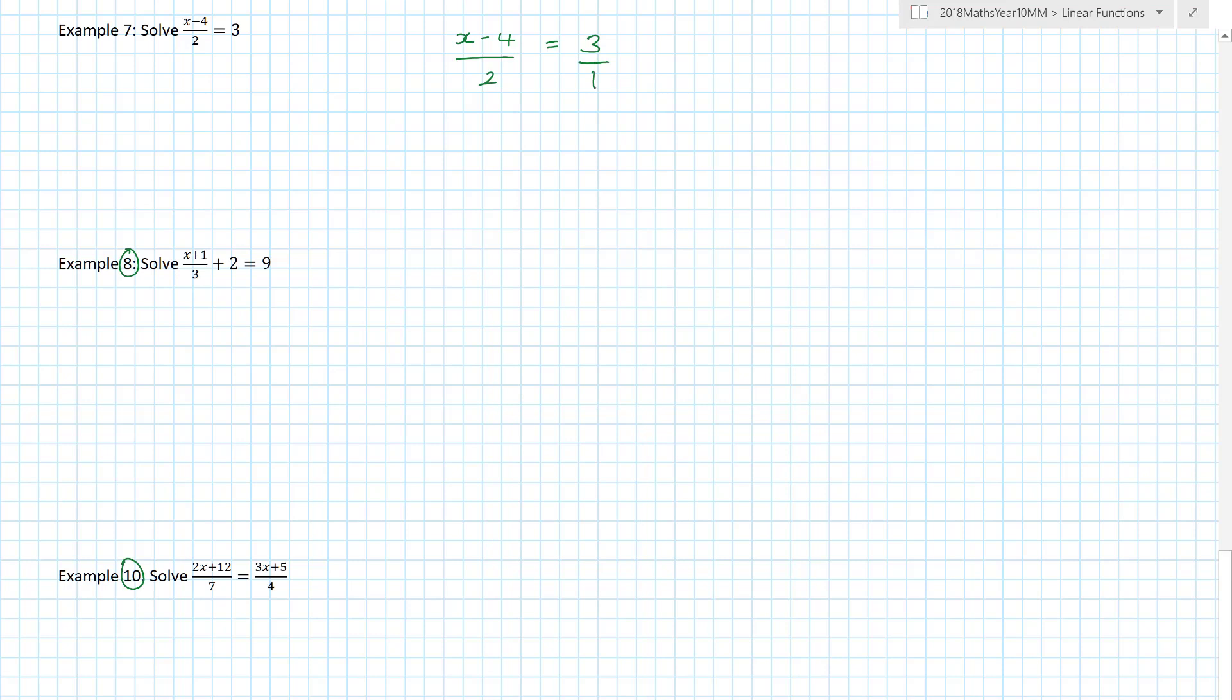What is the important stuff to note here? x minus 4 over 2 equals 3. I have a fraction equals a fraction. Any whole number can be divided by 1. When I have a fraction equals a fraction, I can cross multiply to get rid of the bottoms. I end up with 1 times x minus 4, note the use of brackets, and 3 times 2. 1 times anything is anything. So x minus 4 equals 6, and x equals 10. Wow, funky.